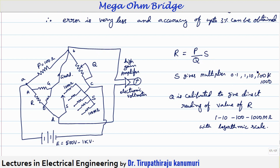As the unknown resistance increases, the effect of R_AG and R_BG becomes more dominant, increasing the percentage error — which is why accuracy decreases from 3 percent to 10 percent at higher ranges. The voltage source used is generally 500 volts to 1 kilo volt, since very high resistances are being measured. A high-gain amplifier connected to an electronic galvanometer is used to increase the sensitivity of the galvanometer and compensate for the shunting effect of R_BG.